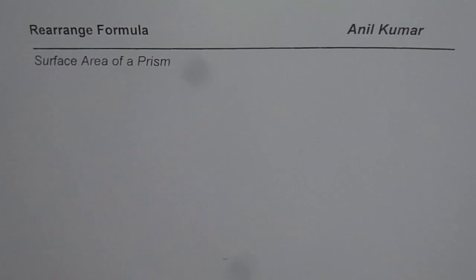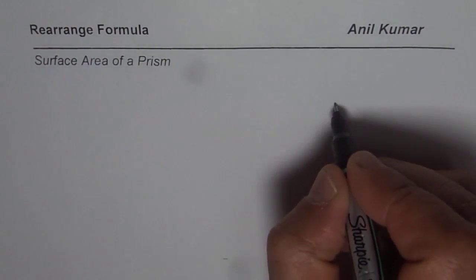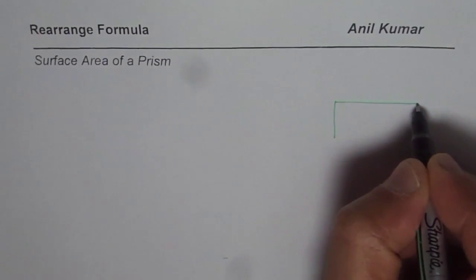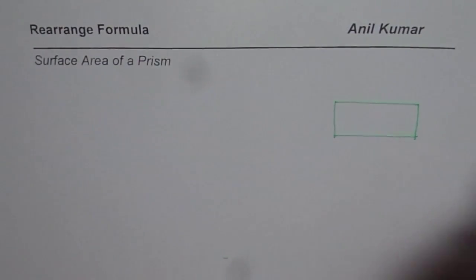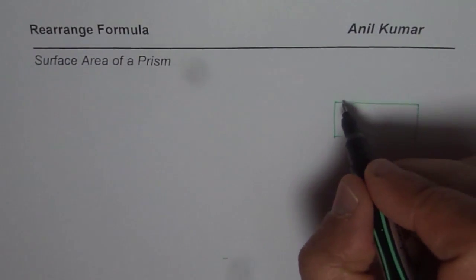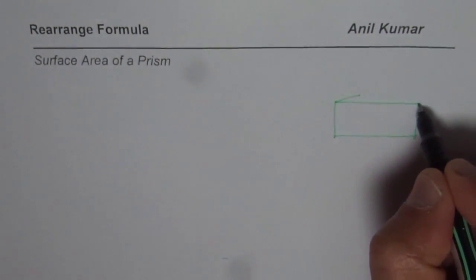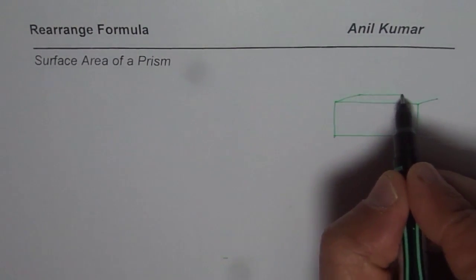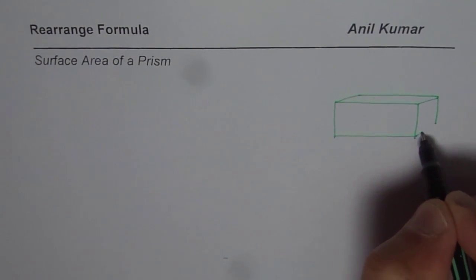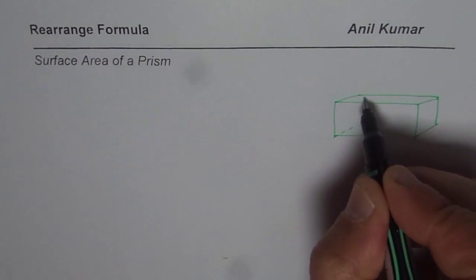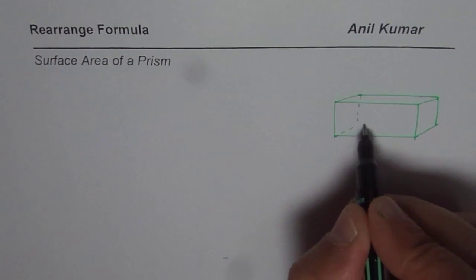I'm Anil Kumar and in this video we'll talk about rearranging a formula for the surface area of a prism. Let me sketch one for you — that's the front face of our prism, it is a rectangular prism. This is the top of the prism, and that's the height. We can just complete it off as a three-dimensional figure, as you can see.